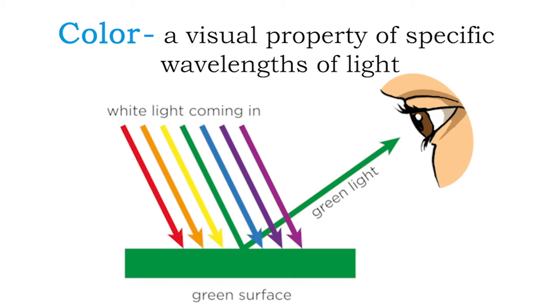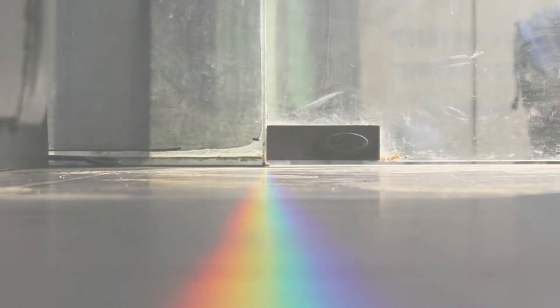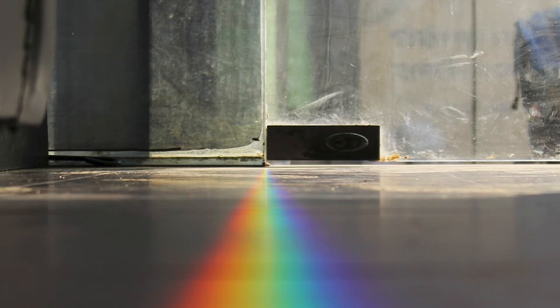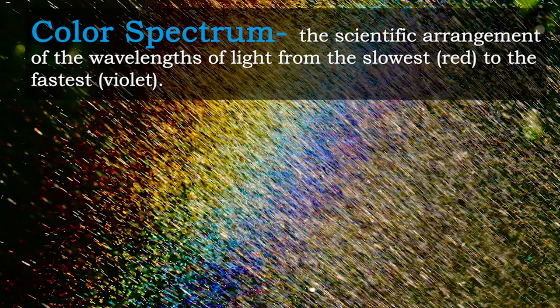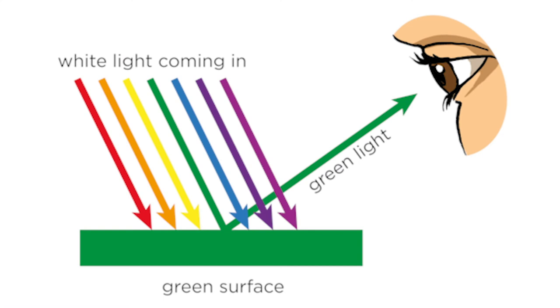When white light is broken down, as when it passes through a prism, wavelengths are separated to reveal the color spectrum — the spectrum of light that is visible to the naked eye. The spectrum ranges from the slowest waves being red to the fastest waves which are violet. We see color when an object absorbs all wavelengths but one, and that reflected wavelength which hits our eye is the color that we see.